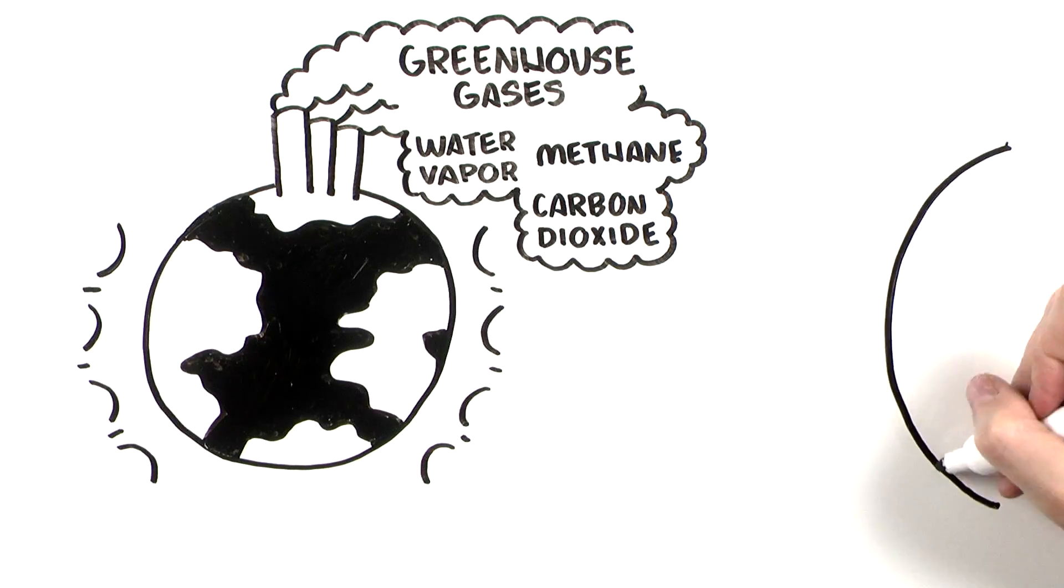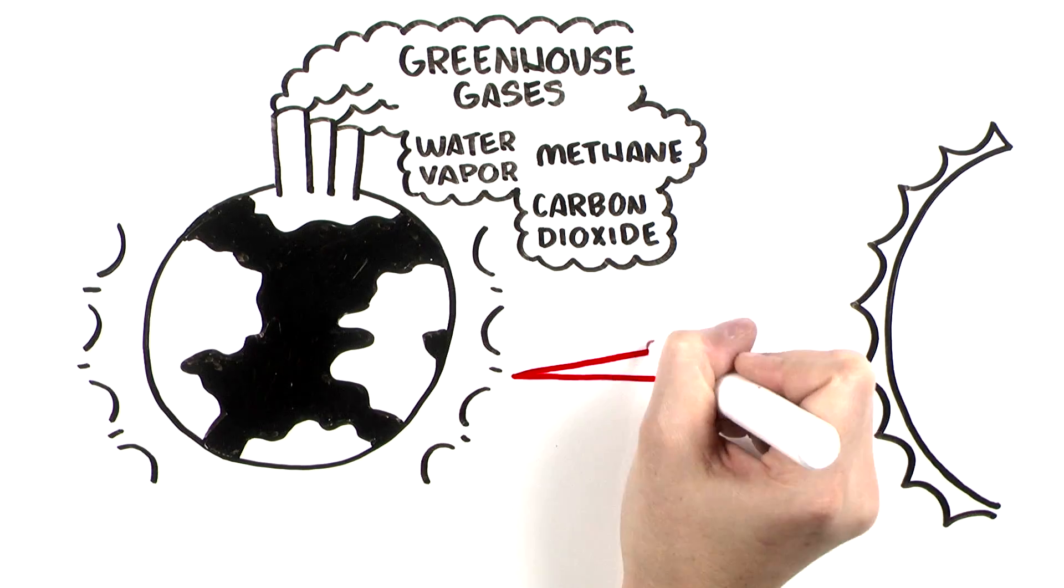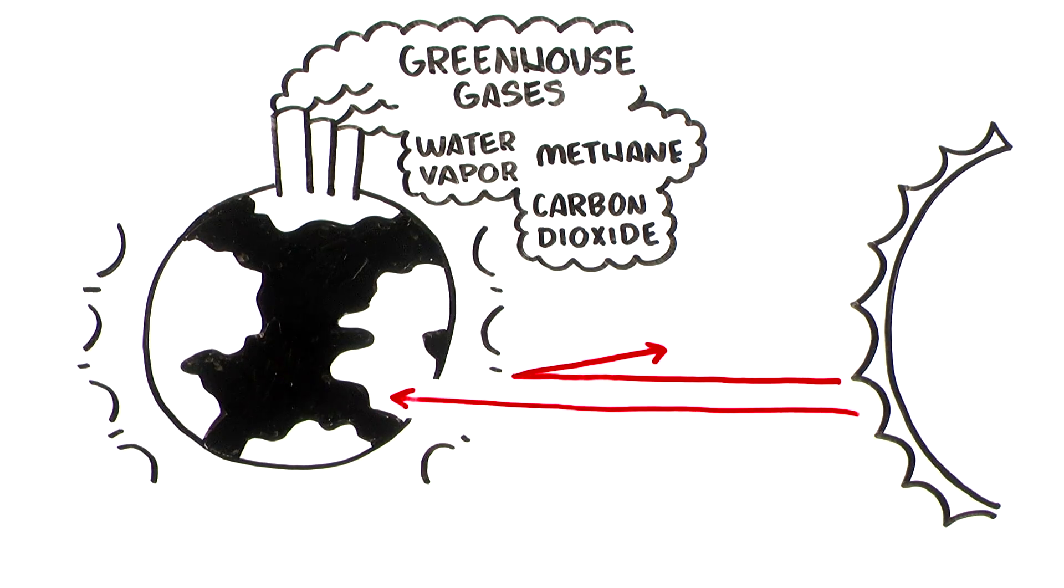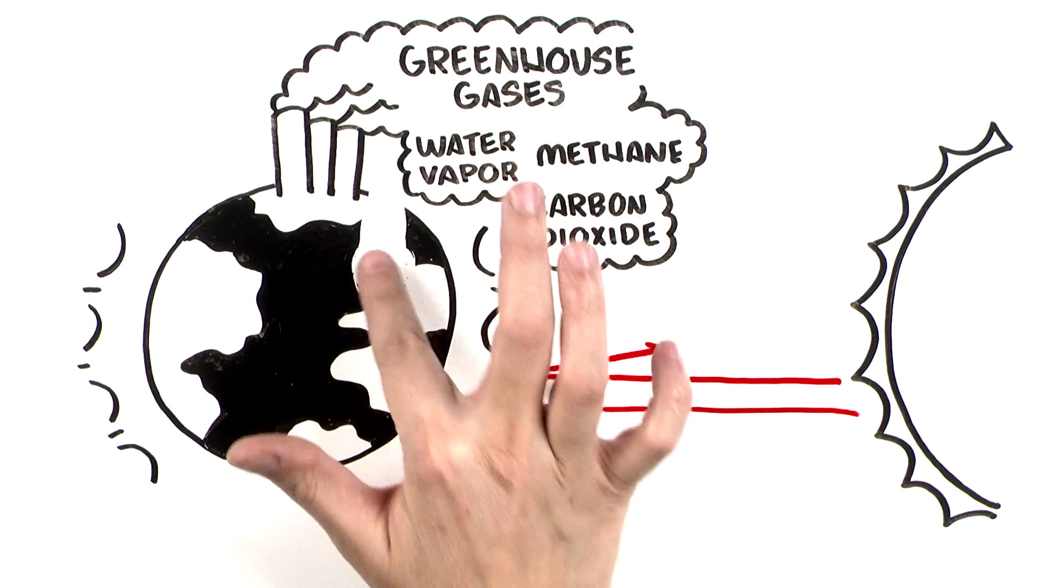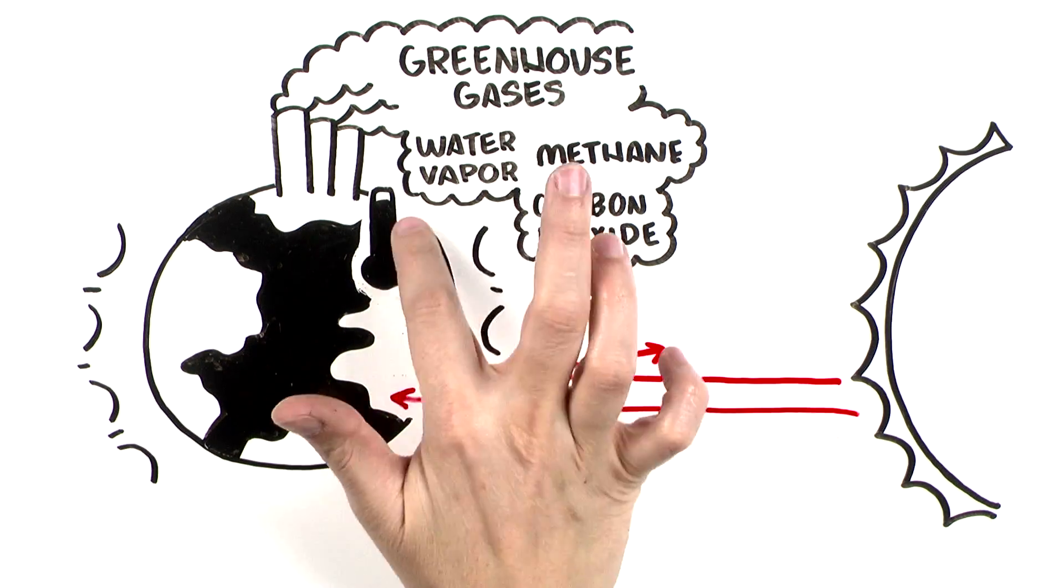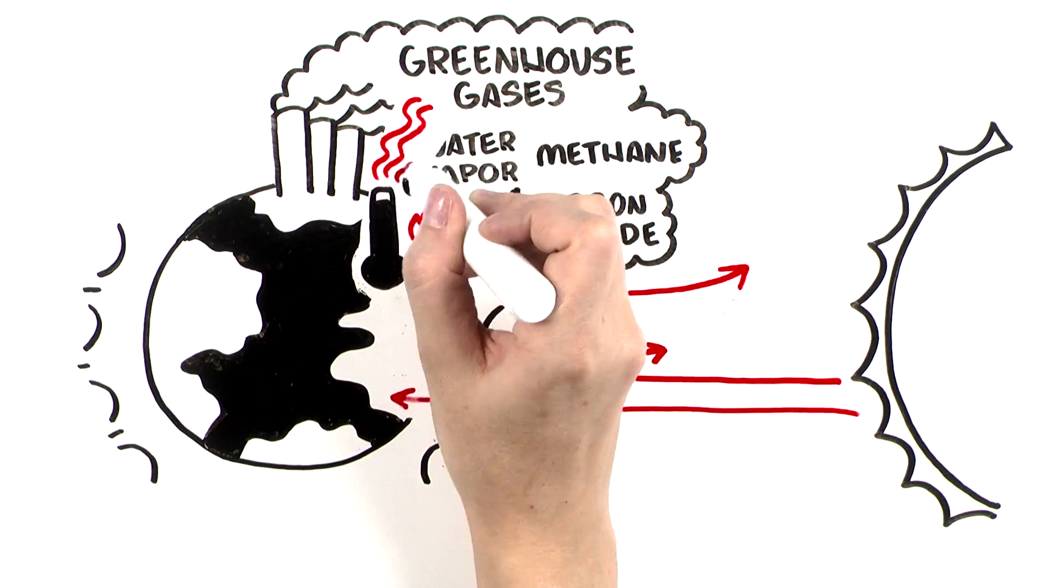The sun sends light through the atmosphere. Some of the light bounces back, but most of it goes through to the land and oceans. Once through, much of the light is absorbed and warms the Earth, then escapes back to space as heat.